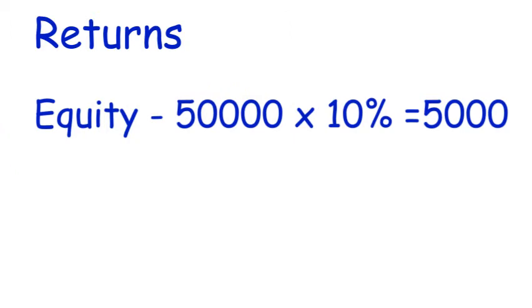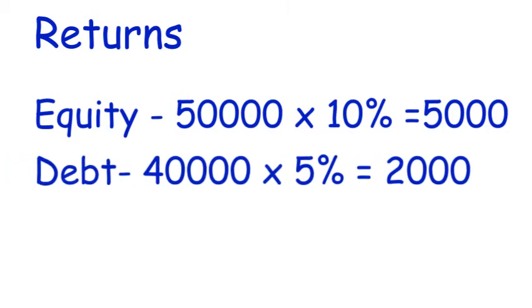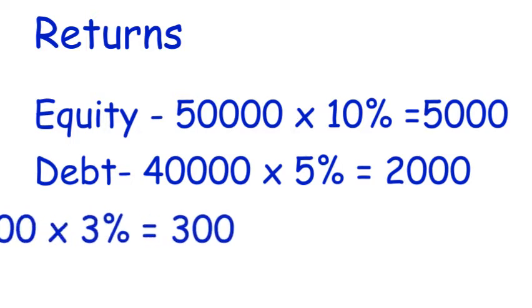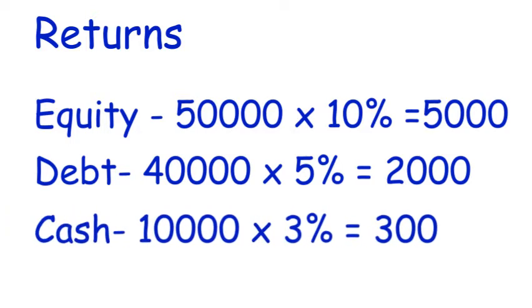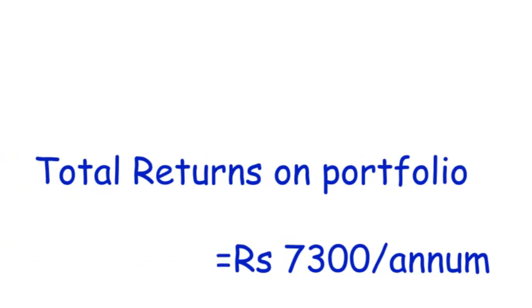Now what is my return? Equities: 50,000 into 10% equals 5,000. Debts: 40,000 into 5% equals rupees 2,000. Liquid cash: 10,000 into 3% equals rupees 300. So the total returns on this portfolio equal rupees 7,300 per annum.